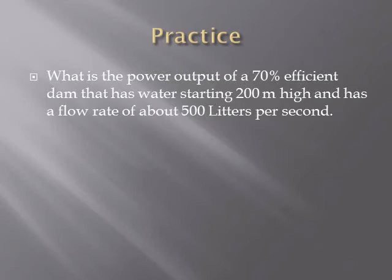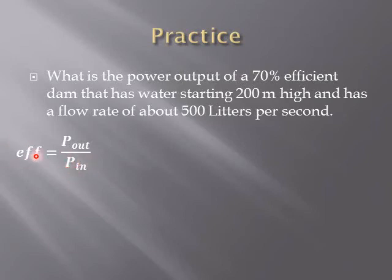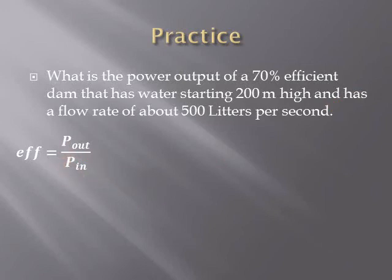Practice problem: What is the power output of a 70% efficient dam that has water starting 200 meters high with a flow rate of 500 liters per second? Efficiency equals power out divided by power in. If we know the power in and the efficiency, we can solve for power out. The energy enters as gravitational potential energy from the water up high, going through the turbine and coming out as electrical energy.